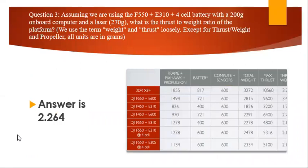And the next, the third one was, we are using the F550 plus E310s plus four cells battery which weighs 200, onboard computer and laser 270 grams, with the thrust weight ratio of the platform. So basically what we are doing, we are calculating grams. As they mentioned, except for the thrust weights and the propeller, all units are in grams. So to calculate, you have the solutions here. I just put directly the computation part, it takes time so I don't want to extend the video a lot. But if you need any help, post me in the comment, I can give you solution.